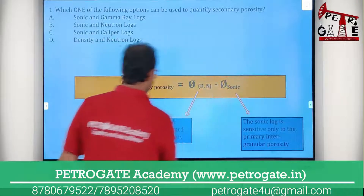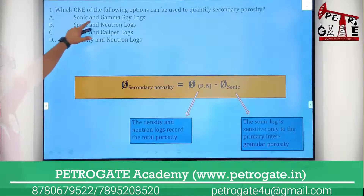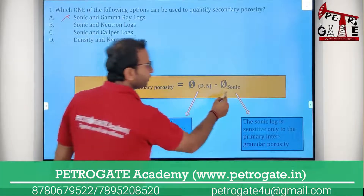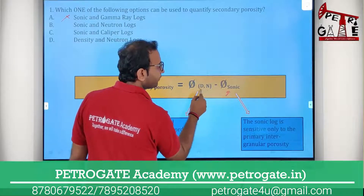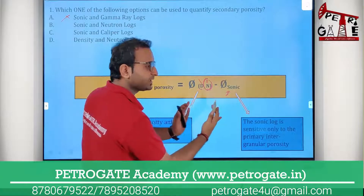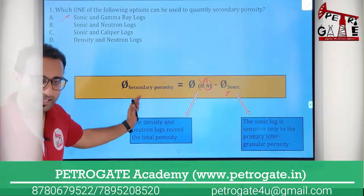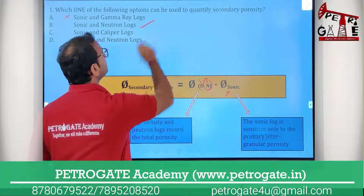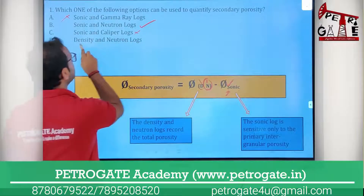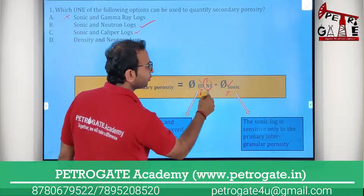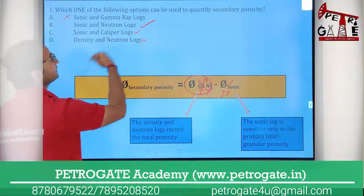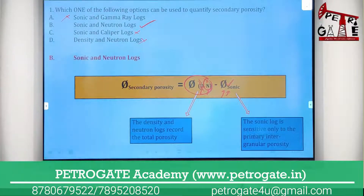Now looking at the answer options: sonic and gamma — no. Sonic and neutron — yes, because you need sonic plus either density or neutron. Sonic and caliper — no. Density and neutron — no, because we also need sonic porosity. So the right option is B.